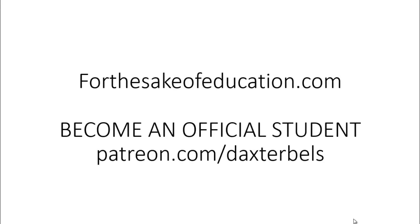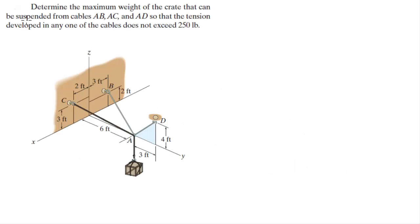For more videos visit ForTheSakeOfEducation.com or support me at Patreon.com/DaxterBells. Let's do this problem that says: determine the maximum weight of the crate that can be suspended from cables AB, AC, and AD, so that the tension developed in any of those cables cannot exceed 250 pounds.